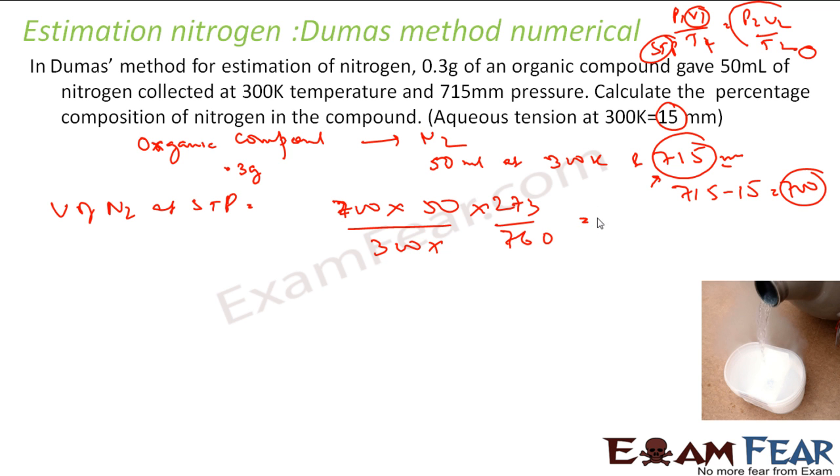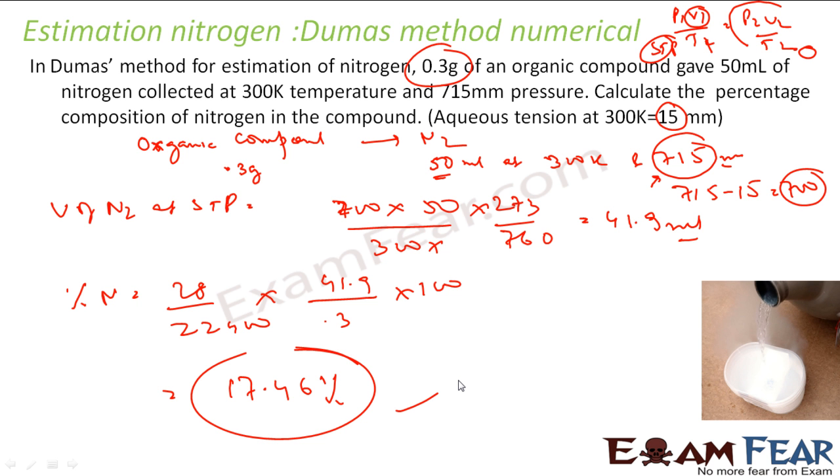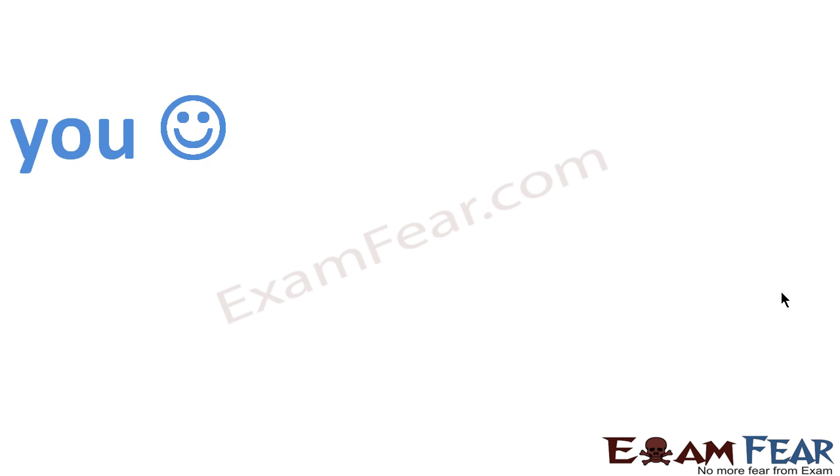So at STP you solve this, you get it comes out to be 41.9 ml. Please note this should almost be same to this, this 50, this is 41.9. This should not vary much. Because normally when you change temperature and pressure the volume varies but not that much. So it is 41.9 ml. So directly you can use the formula, percentage of nitrogen is nothing but 28 by 22400 into volume, that is 41.9 ml, divided by the mass of organic compound into 100. This formula we have used. You put the values, you get the answer as 17.43%. Easy one. The only catch here is you find the volume of nitrogen, convert into STP, and then use the volume.